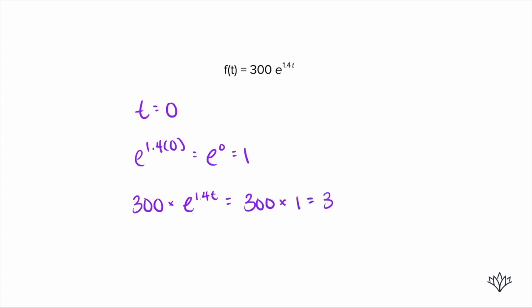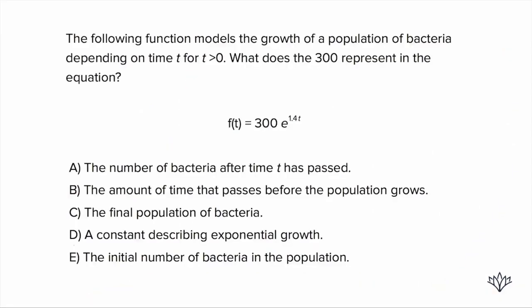So that means at the beginning, before any growth happens, what is our population? Our population is 300. Remember, what is this talking about? This function is modeling the growth of a population of bacteria. So when t is zero, what is the population? It's 300.